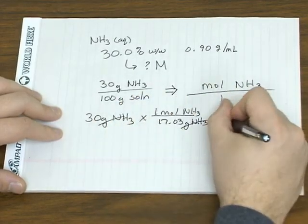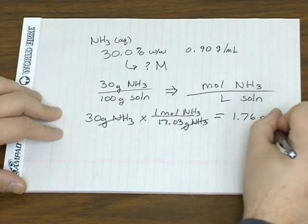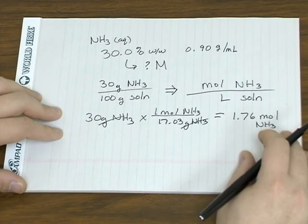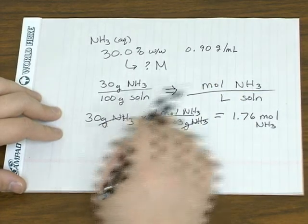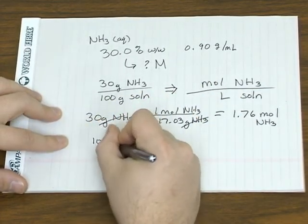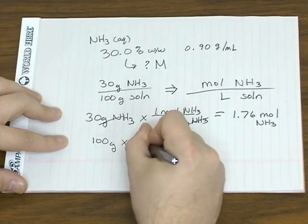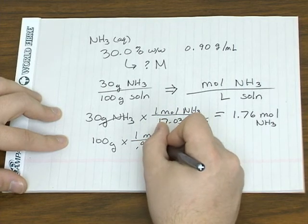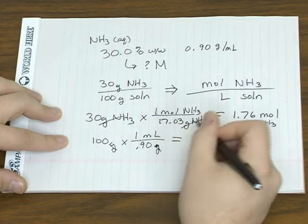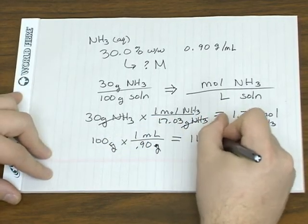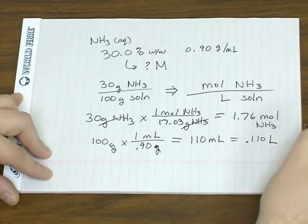So using its molar mass that gives us 1.76 moles. And if we know the density, which we do, we can convert between mass and volume. So 100 grams, if the density is 0.9 gram per mill, it's going to be a volume of 110 milliliters, which is the same as 0.11 liters.